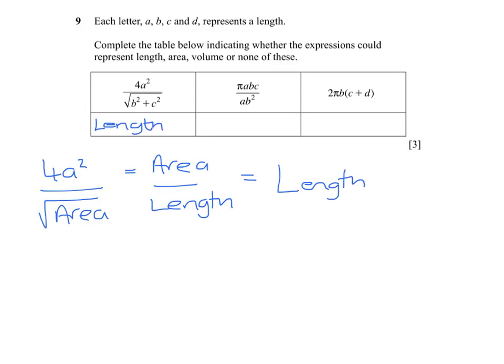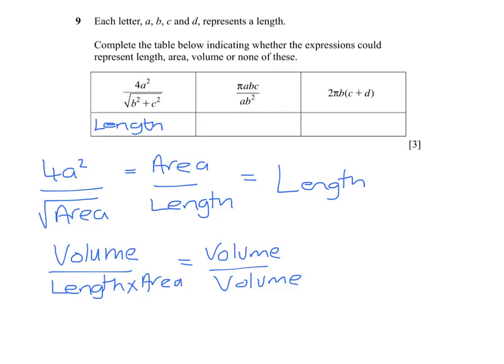If we then consider the second, again we can ignore the pi. It is dimensionless. We have 3 lengths on the top which is going to give us a volume. And in the bottom we have a length times an area, which is also a volume. So we have a volume divided by a volume, and that gives us none of these.